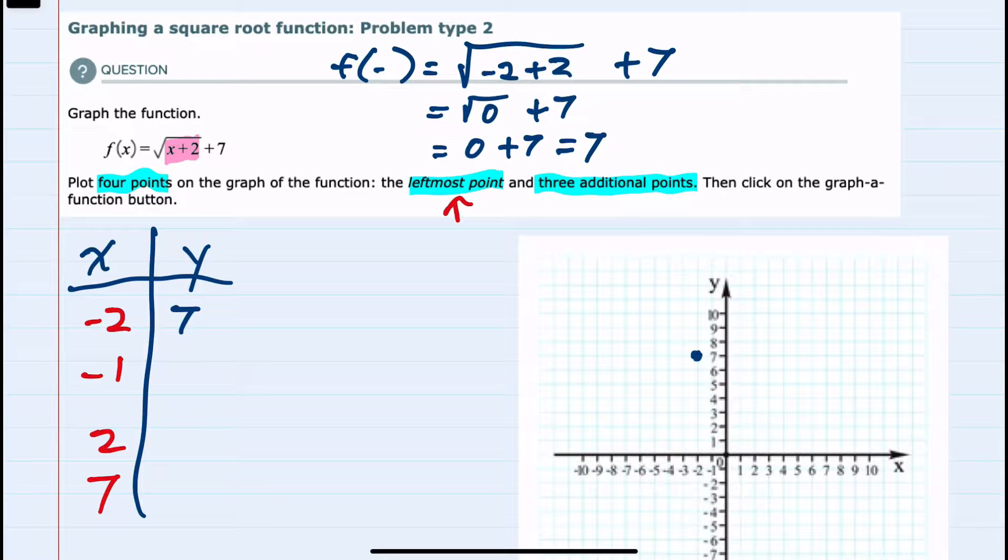And we can repeat the substitution for the other x values. So I'll move to negative 1. f of negative 1 would be the square root of negative 1 plus 2 plus 7. And here the radical will simplify to the square root of 1 plus 7, which is just 1 plus 7 or 8. So we have our second coordinate negative 1, 8.